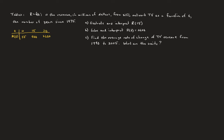We have R equals F of T, the revenue in millions of dollars from NFL Network TV as a function of T, the number of years since 1975. The first question is to evaluate and interpret R of 15. We can read this right from the table: when T is 15, R is 900. So R of 15 equals 900.